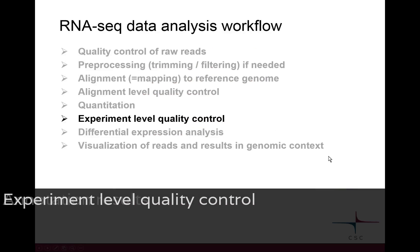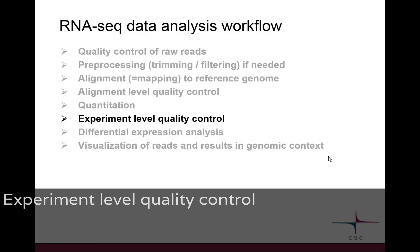This is the third quality control step. We did the quality control of the raw reads, then the quality control for the alignment level, and now we do it for the whole experiment level.